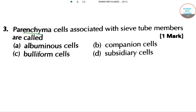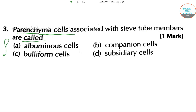In the next question, we are asked about the parenchymal cell associated with sieve tube members — what are they called? The answer will be option B, that is companion cell.